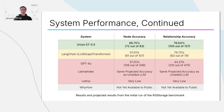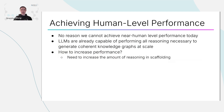In terms of my projections for this space, I think there is no reason we cannot achieve human-level performance today, or at least near human-level performance. LLMs are already capable, in my view, of performing all the reasoning necessary to generate coherent knowledge graphs at scale. But the numbers we've seen haven't necessarily been super high — so how can we increase performance? My response is that we need to increase the amount of reasoning that is occurring in the scaffolding.